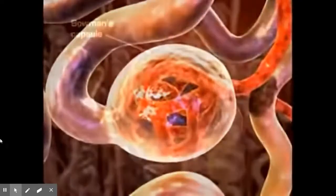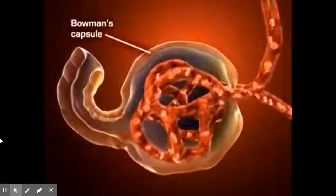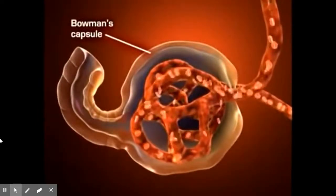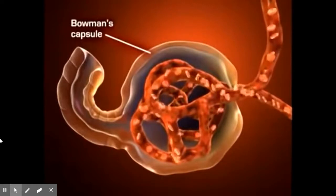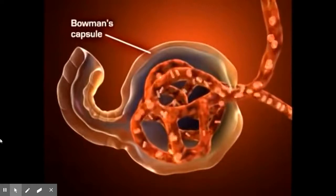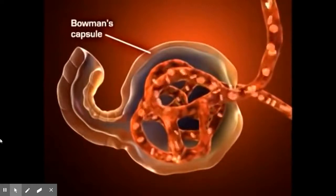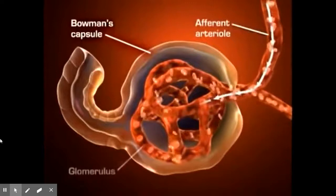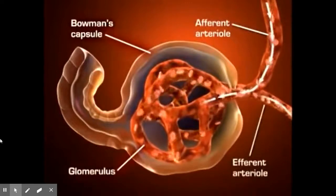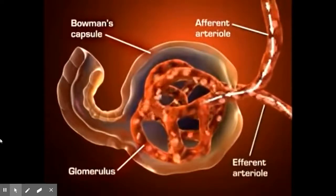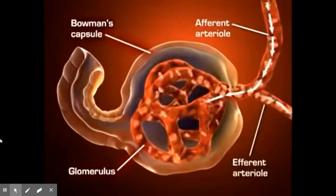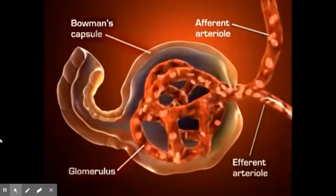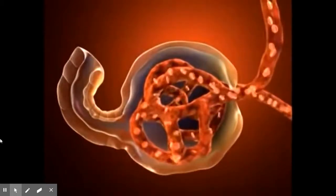The lobular arteries further subdivide to form interlobular arteries, which branch off into afferent arterioles. Blood flows into the glomeruli through the afferent arterioles and out of the glomerulus through the efferent arterioles. The afferent and efferent arterioles regulate glomerular capillary pressure by selectively dilating or constricting.